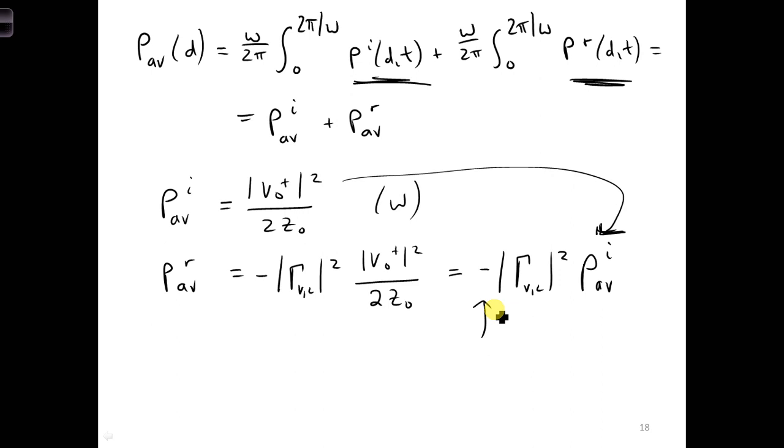This means the amount of power delivered to the load, which I'll have a superscript L, is we subtract the two. We would take the incident time average power minus the reflected time average power.